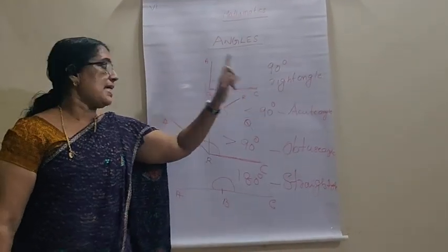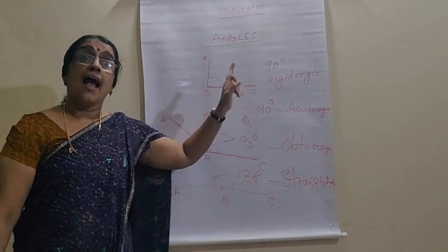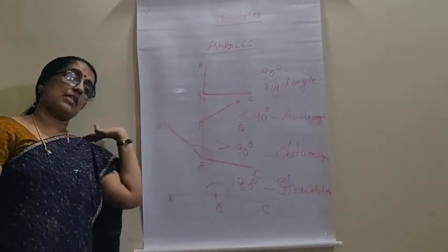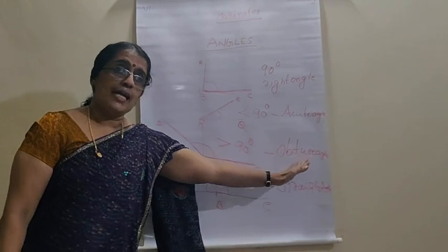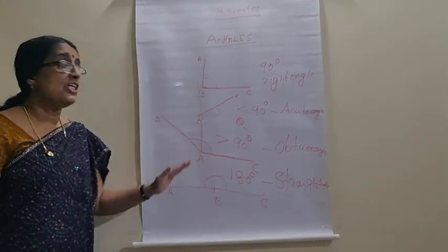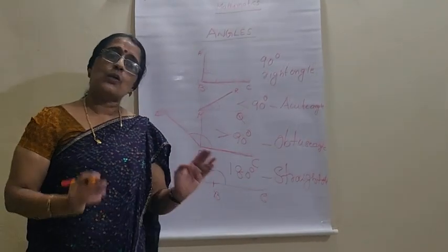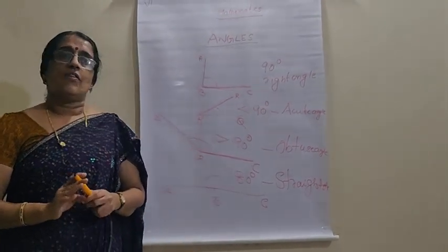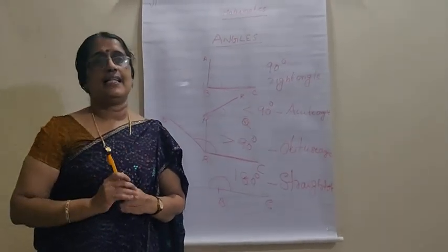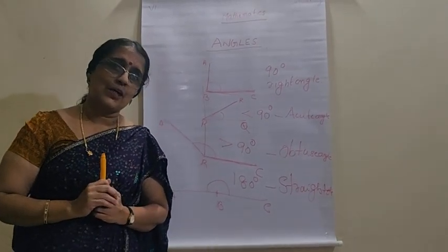Right angle, equal to 90. Less than 90, acute angle. Greater than 90, that is, moves away, obtuse angle. On the same line, straight angle, 180 degrees. I think you understood like this. Then, we will practice it with homework in the next class. Okay? Thank you. Bye.